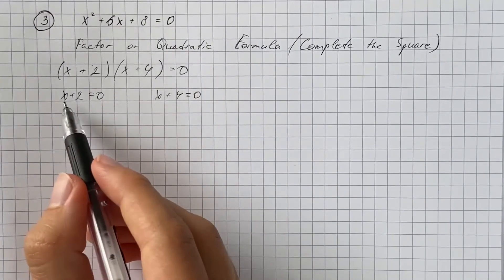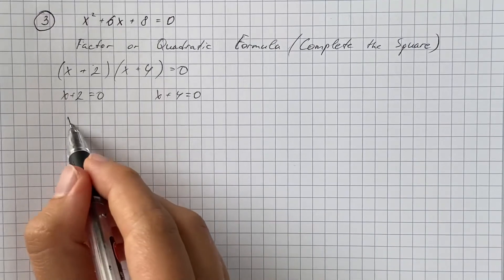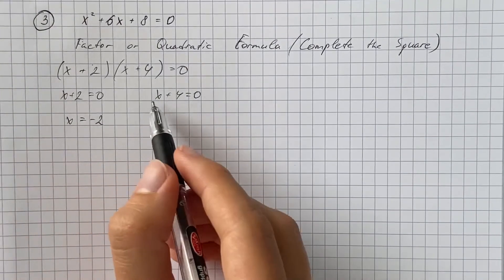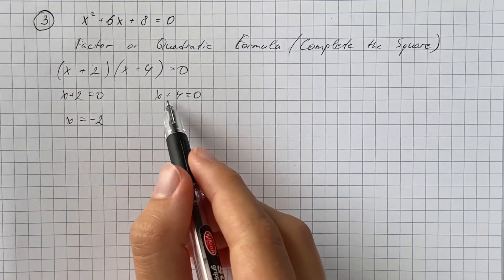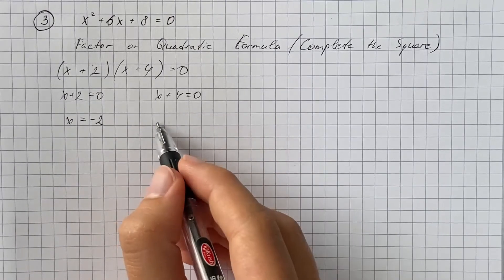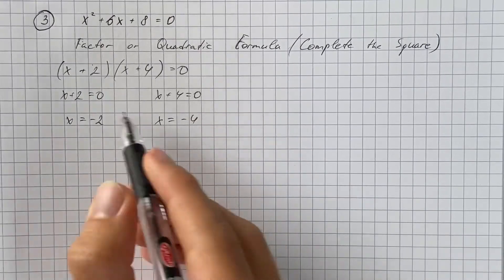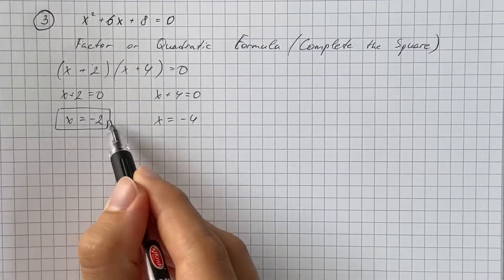Therefore, if x plus two equals zero, then x equals negative two. And if x plus four equals zero, we subtract four from both sides and get that x equals negative four. Those are our answers.